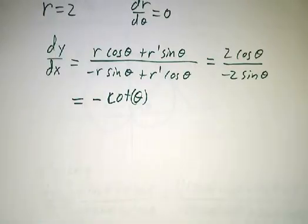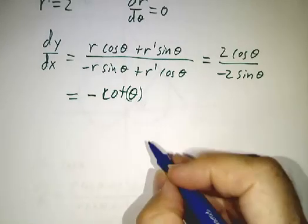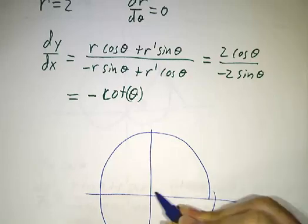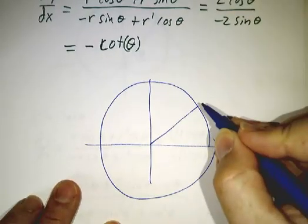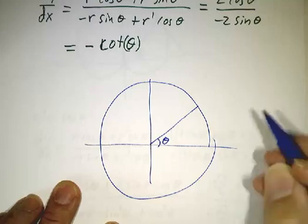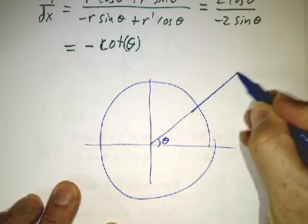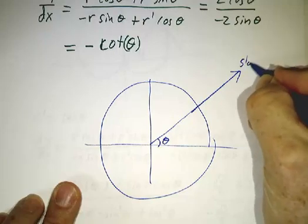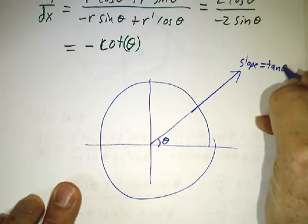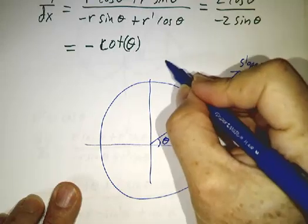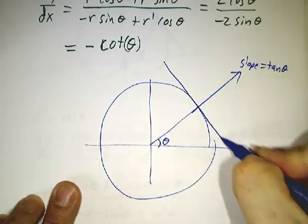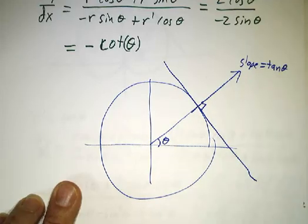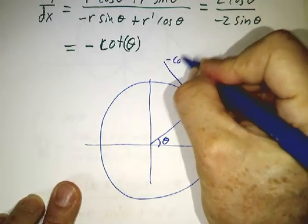This should make sense geometrically, because here we have our circle. And we're looking at what's happening at angle theta. And the line that heads out like this, the slope of this line is the tangent of theta. The line we're interested in is perpendicular to that, and it has a slope of negative cotangent of theta.